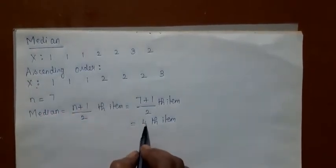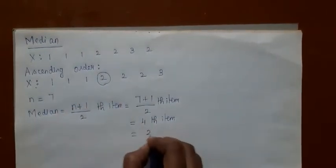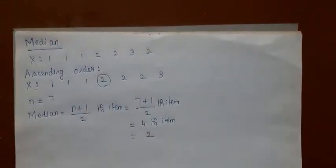In the arranged data — don't take the value from the original question — in the arranged data, the fourth item is 2. So, this is the median.